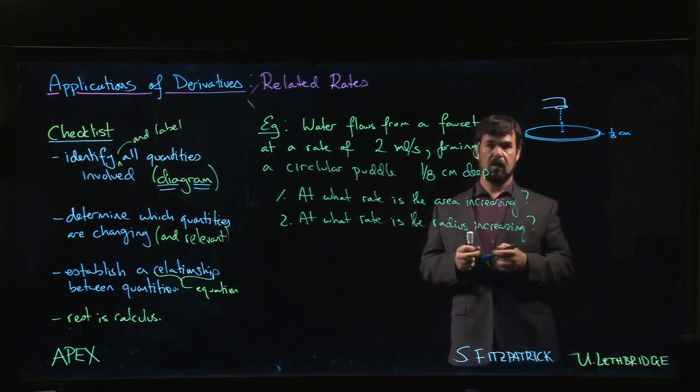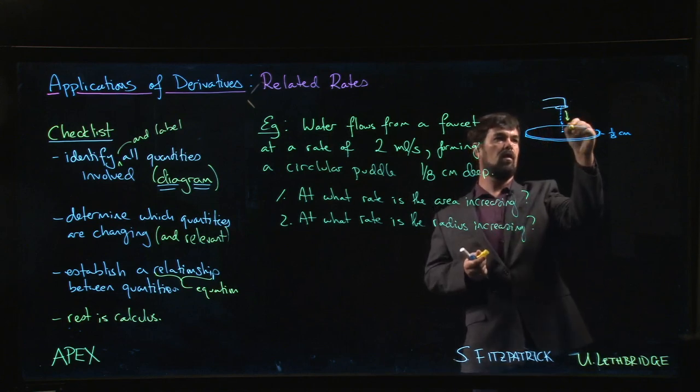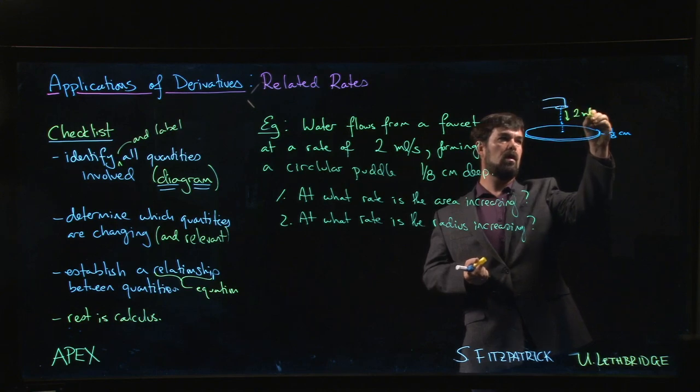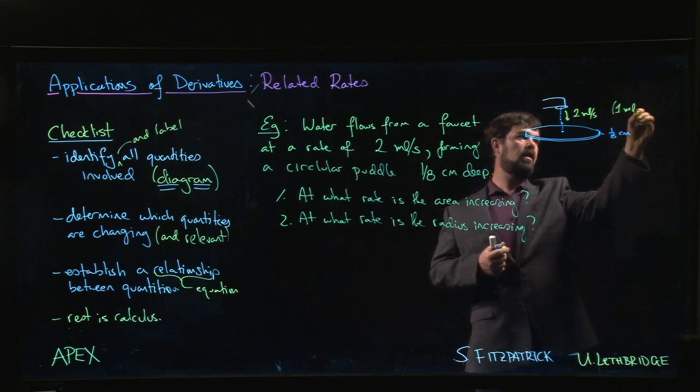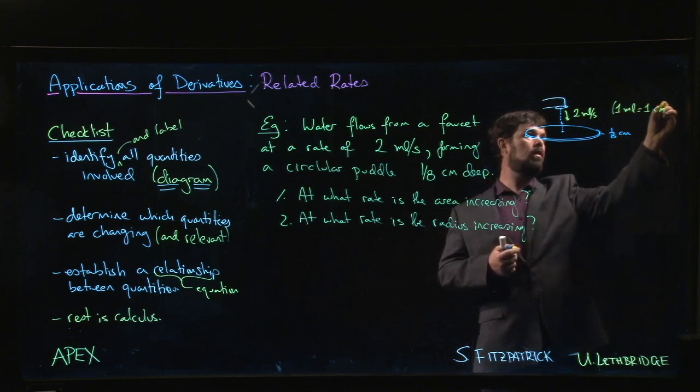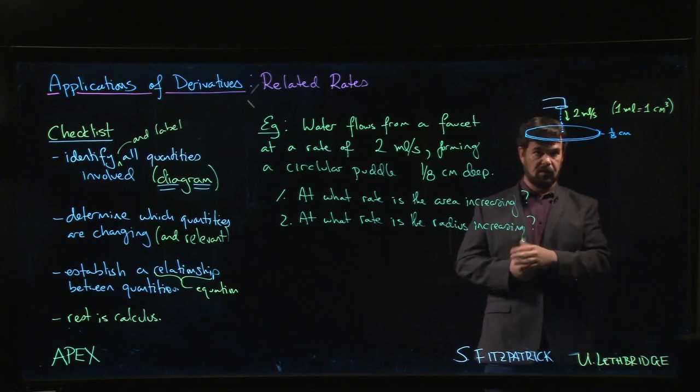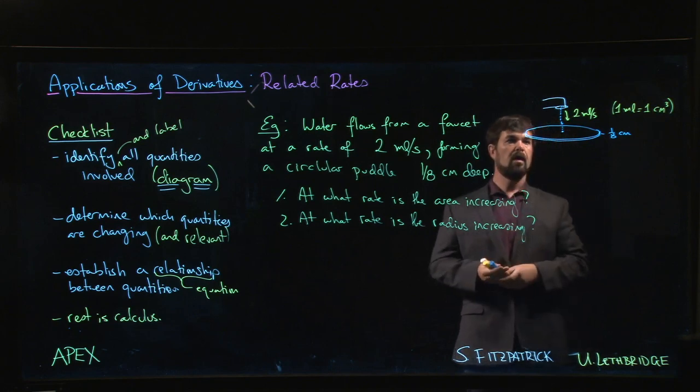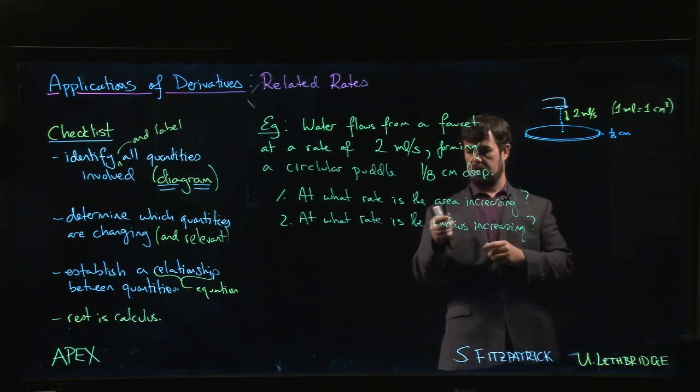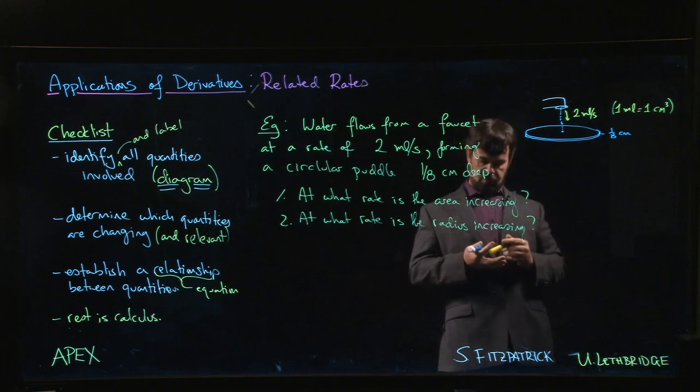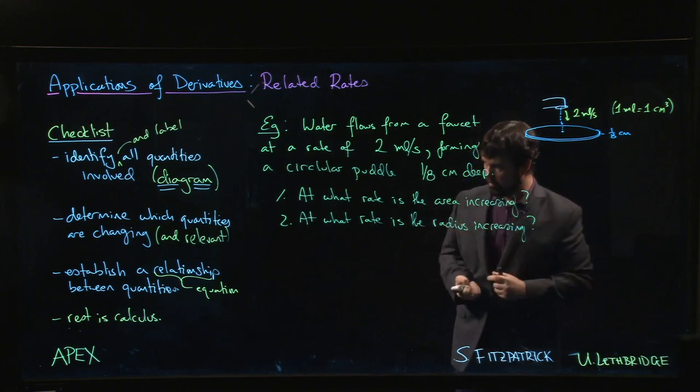We know that the water is flowing at a rate of two milliliters per second, and we need to remember that one milliliter is equal to one cubic centimeter. We need to be able to relate units of volume to units of length to solve this problem. What can we say about the area? First of all, let's keep in mind this two milliliters per second is adding water to the puddle.